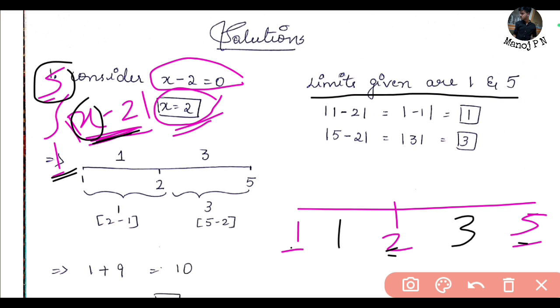See here, limits given are 1 and 5. So substitute x: 1 minus 2 equals minus 1 mod, which is 1. If x is 5, then 5 minus 2 equals 3 mod, which is 3.